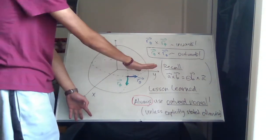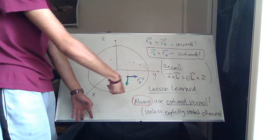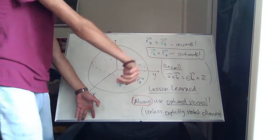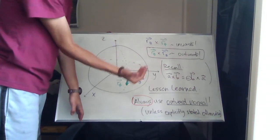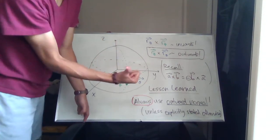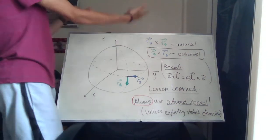At any point, if we take rθ and we cross it with rφ, our thumb points into the sphere, that's inwards. But if we take rφ and we cross it with rθ, that's out of the sphere, so that's outwards. That's why they're in and out.